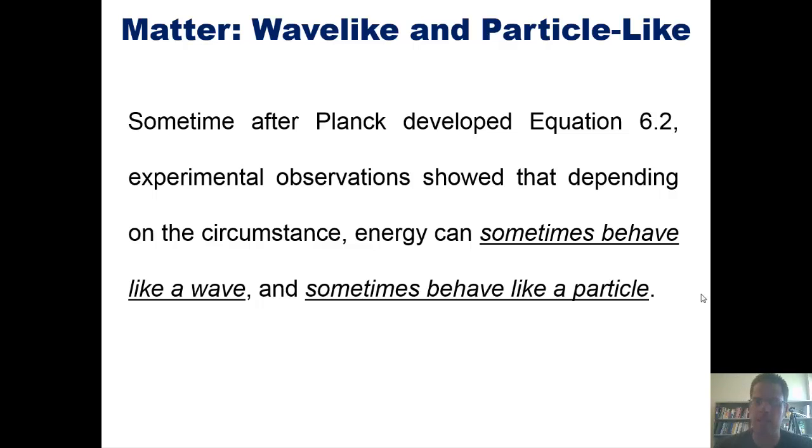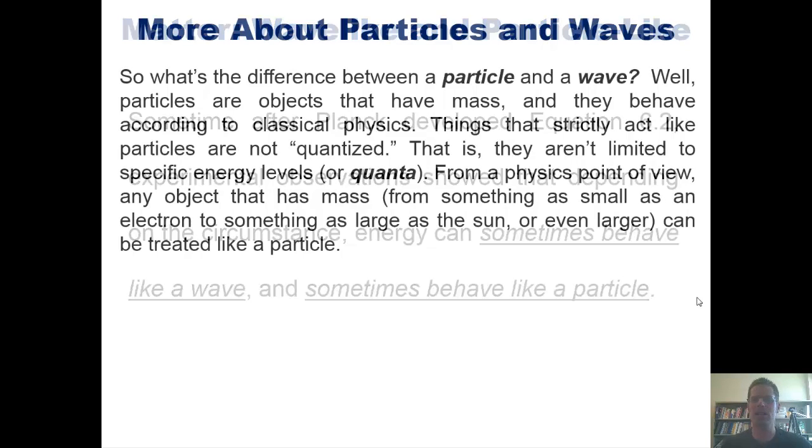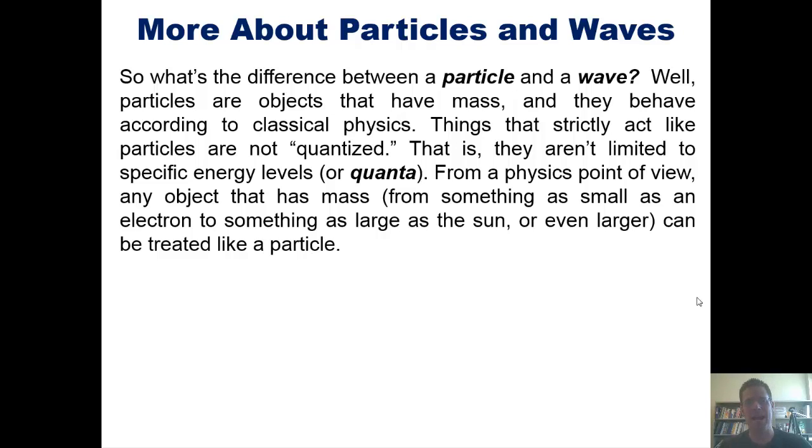Sometime after Max Planck developed equation 6.2, experimental observations showed that depending on the circumstance, energy can sometimes behave like a wave and sometimes behave like a particle. So what's the difference between a particle and a wave? Well, particles are objects that have mass and they behave according to classical physics.